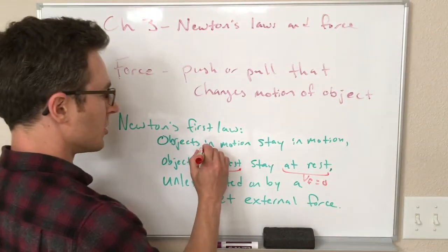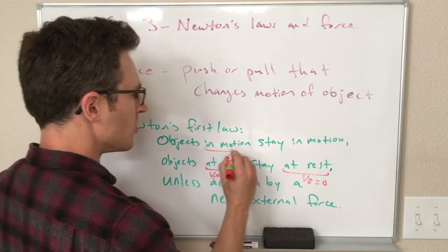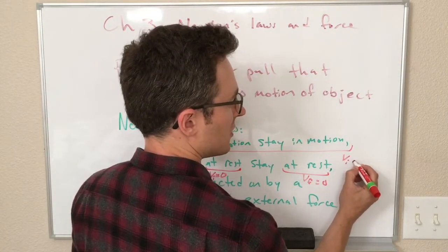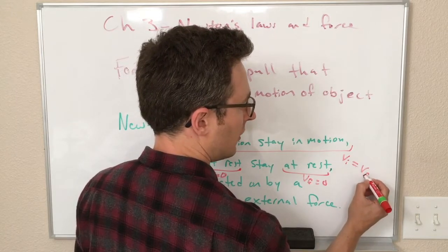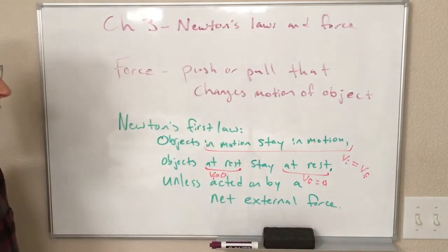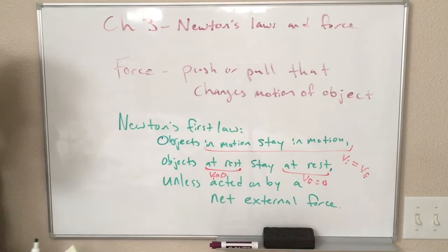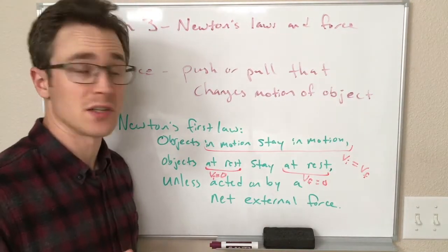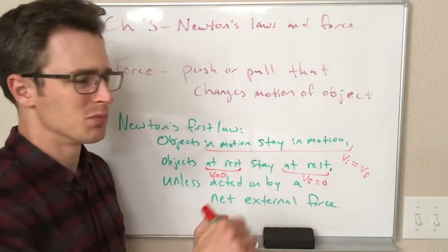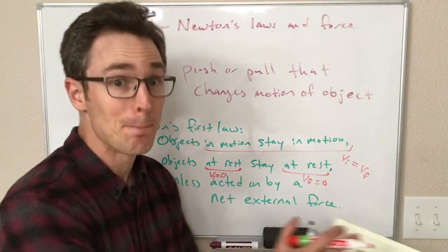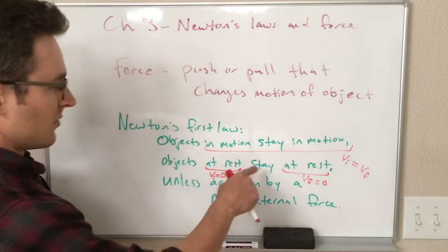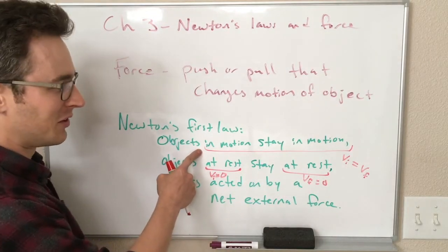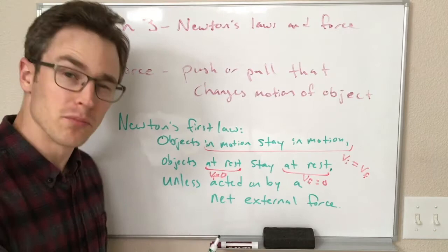And when he says objects in motion stay in motion, what this means is that v initial is equal to v final. So an object with some velocity is not going to change its velocity. It's going to stay, not just stay in motion, but stay with that same motion. So this at rest, stay at rest thing, this is just a special case of this first one where v initial and v final are both 0.